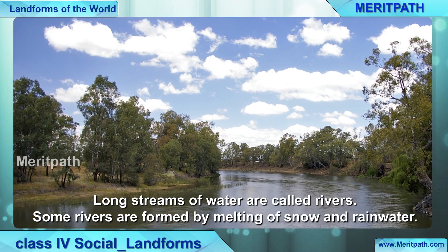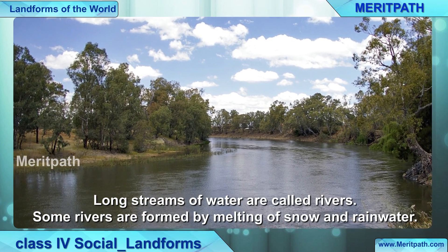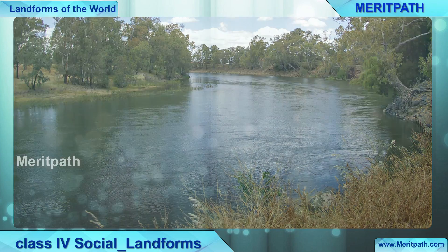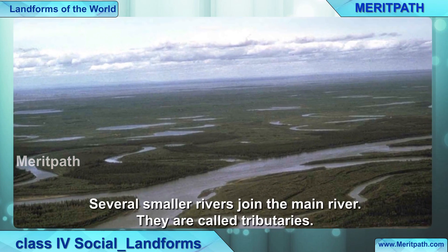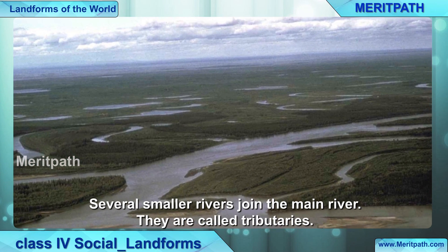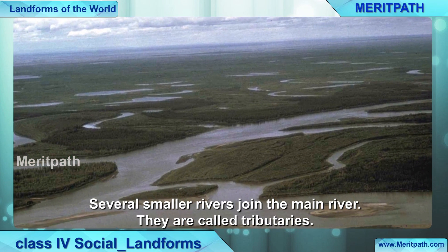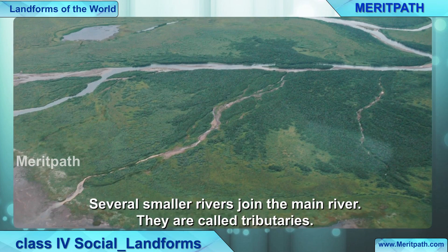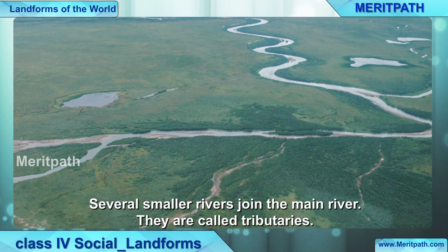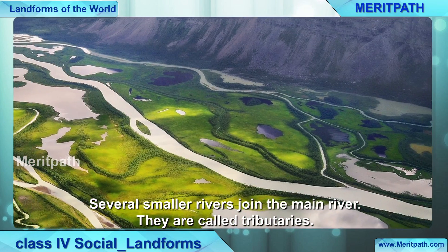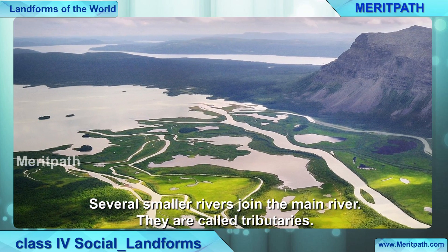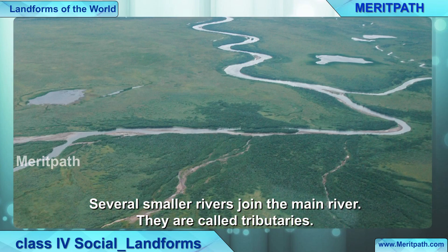Rivers. What are rivers? Long streams of water are called rivers. Some rivers are formed by the melting of snow and rainfall. Tributaries — what are tributaries? Several smaller rivers that join the main river are called tributaries. You can see in the diagram how the small rivers are joining the big, long river, which then flows into the ocean.